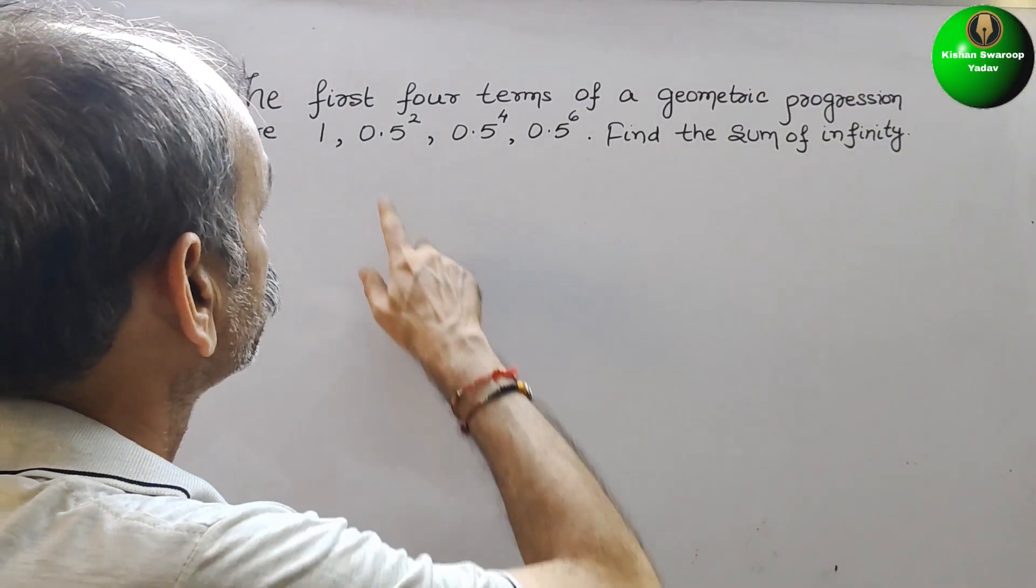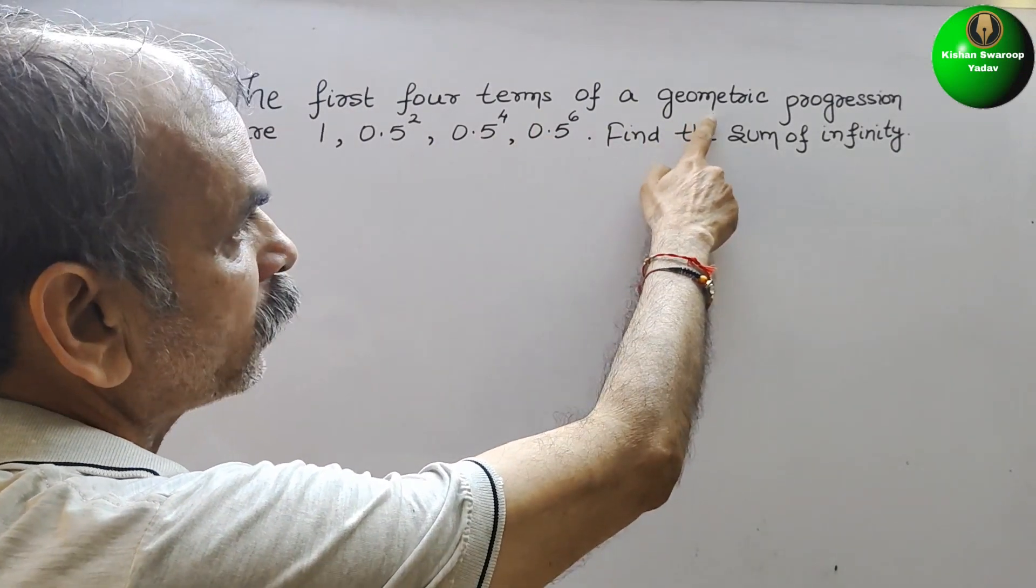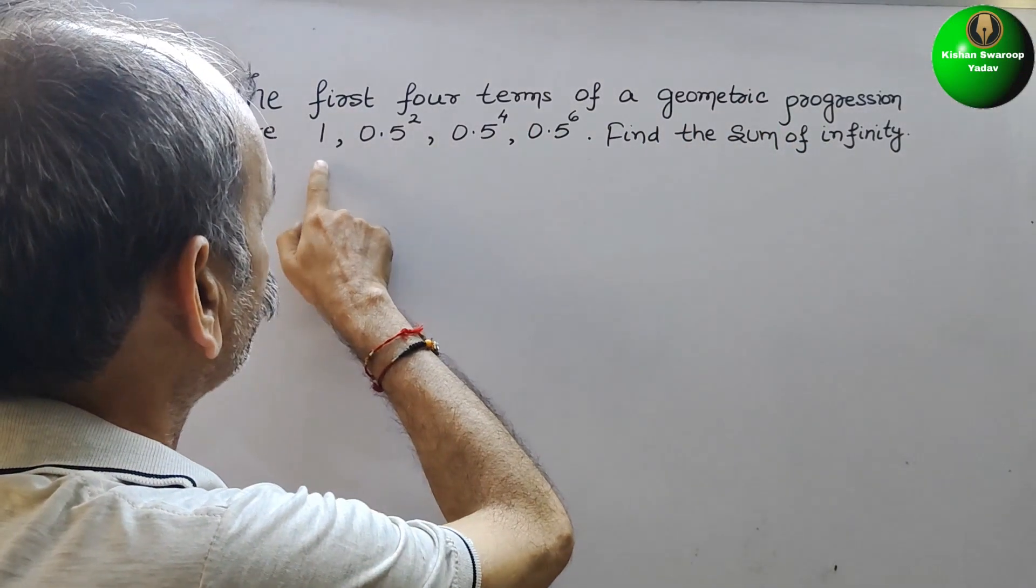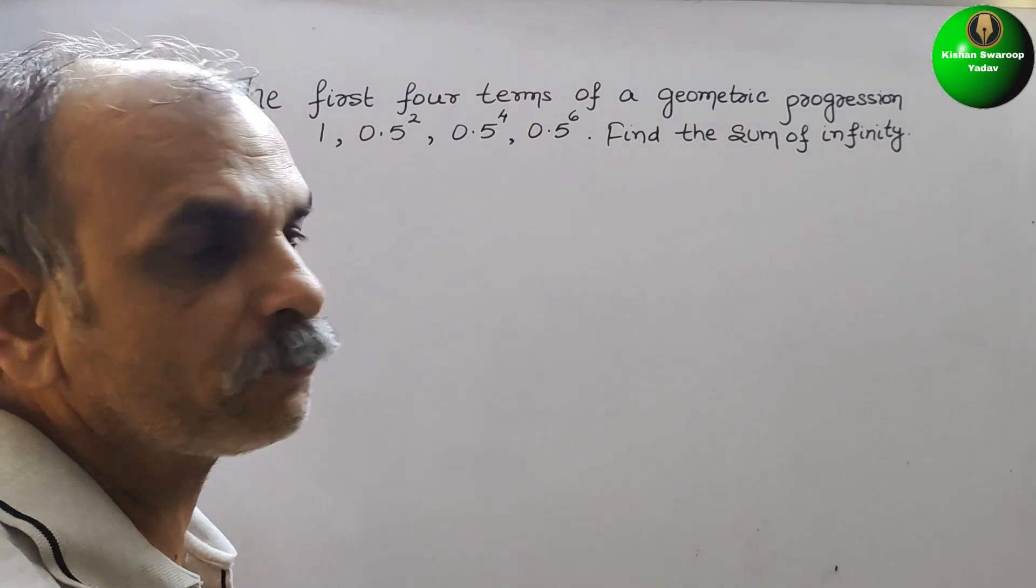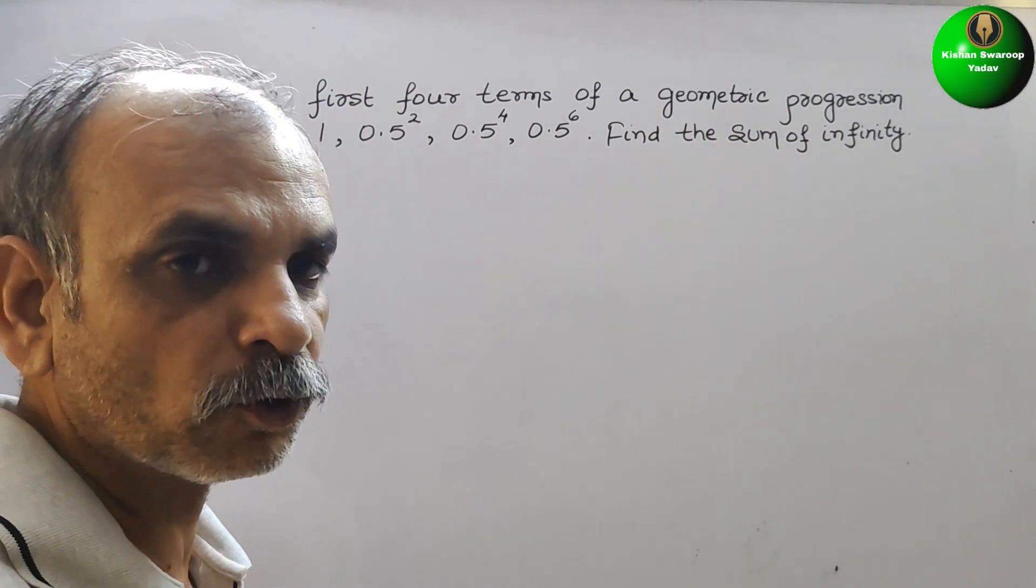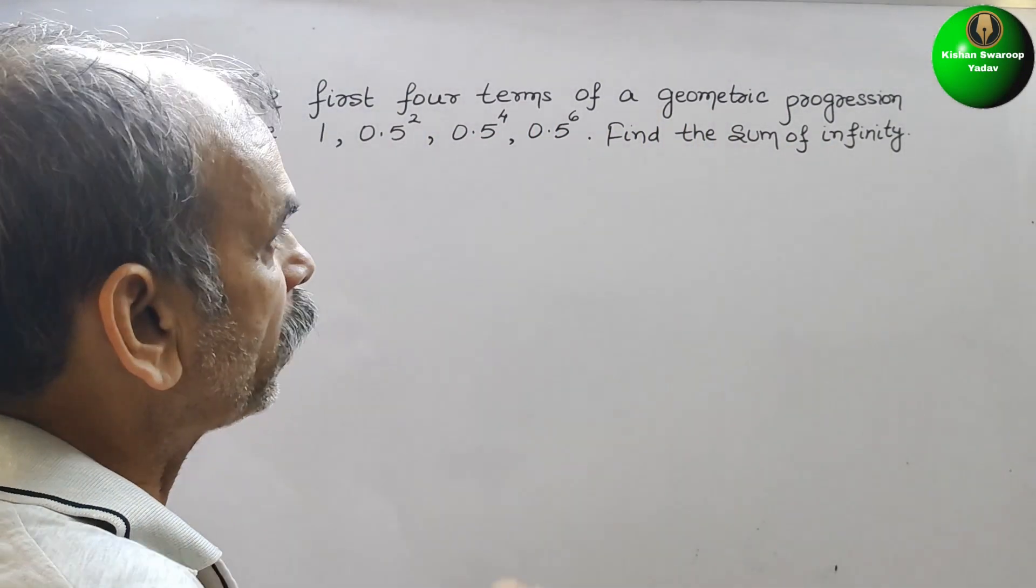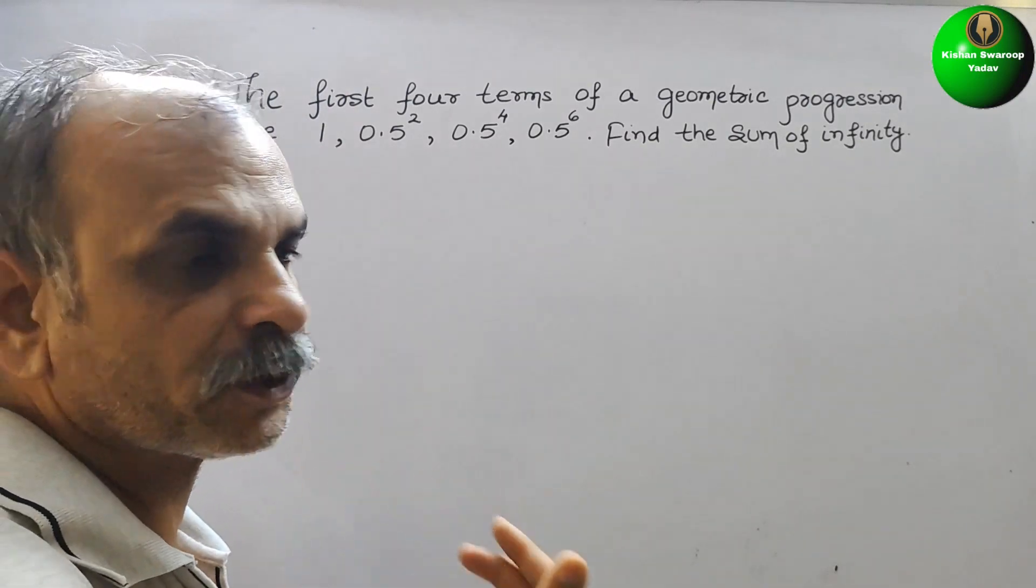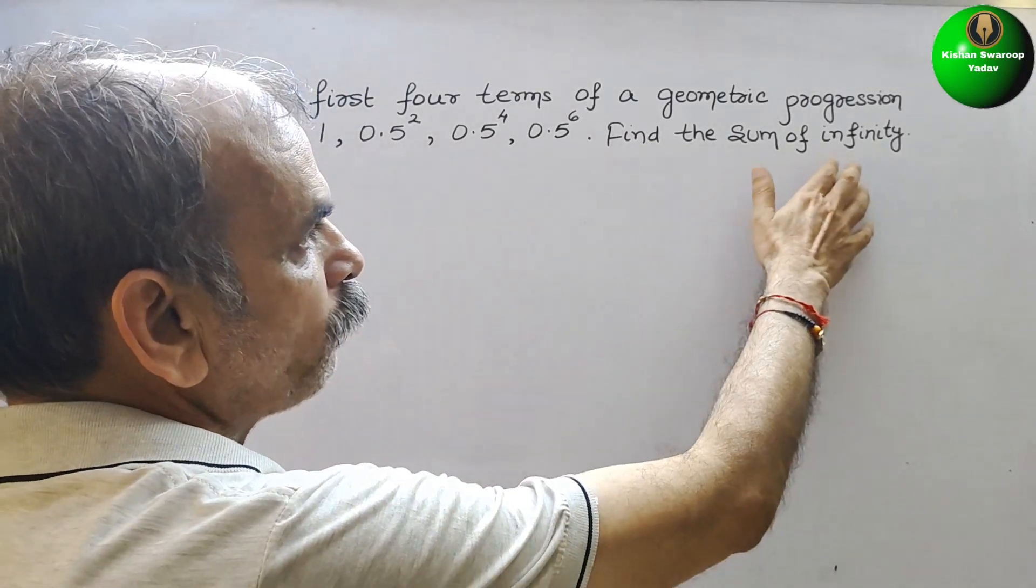Your question is: the first four terms of a geometric progression are 1, 0.5 square, 0.5 to the power of 4, 0.5 to the power of 6. Find the sum of infinity.